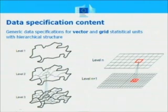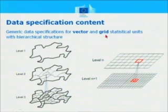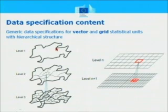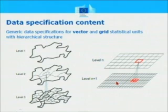One of the most important characteristics is that we have two different kinds of statistical units: vector statistical units and gridded statistical units. Both of them have a very strong hierarchical structure. We have different levels of subdivisions for statistical units, and the same exists for statistical grids, where we have multi-resolution grids.